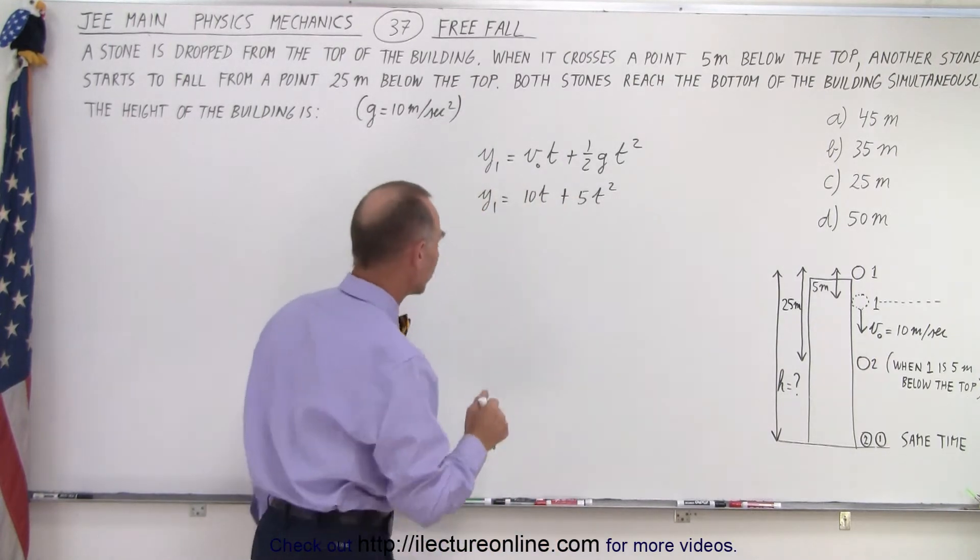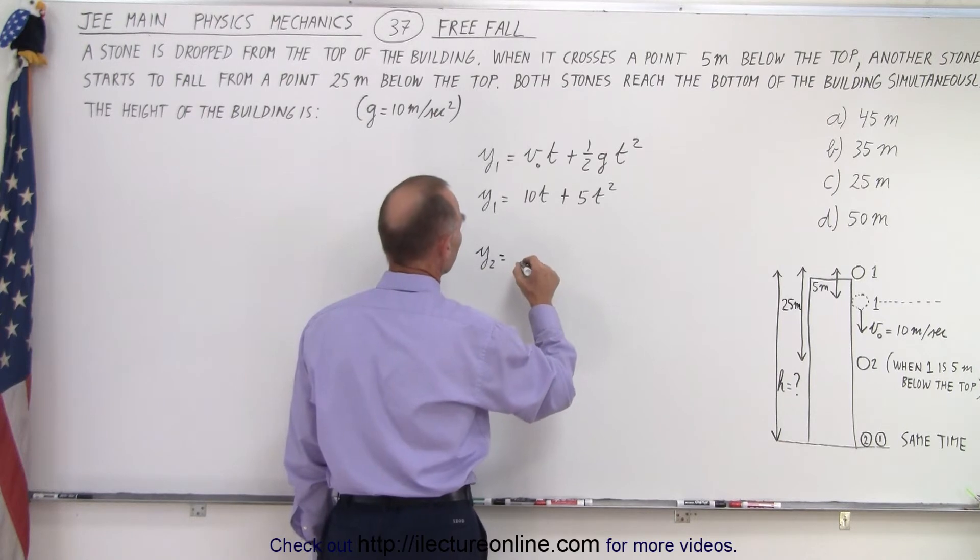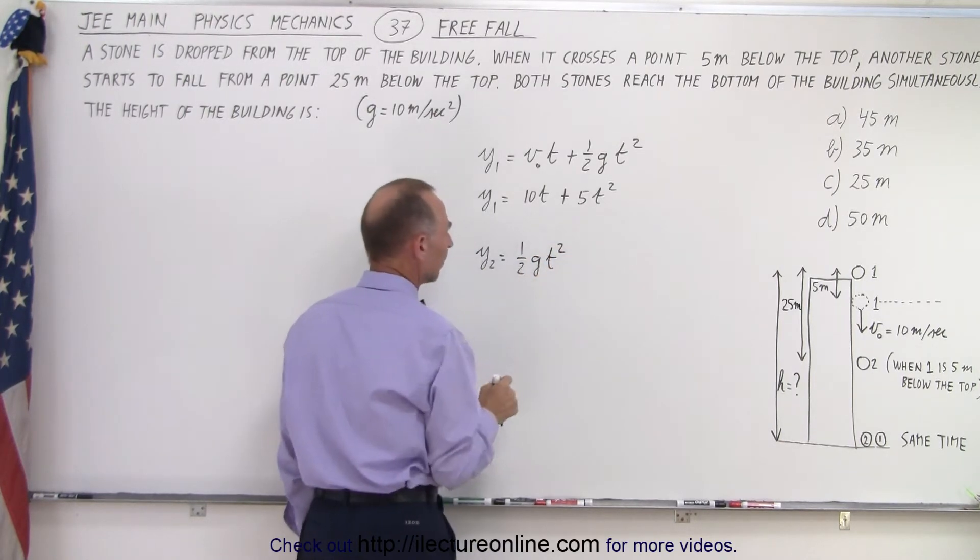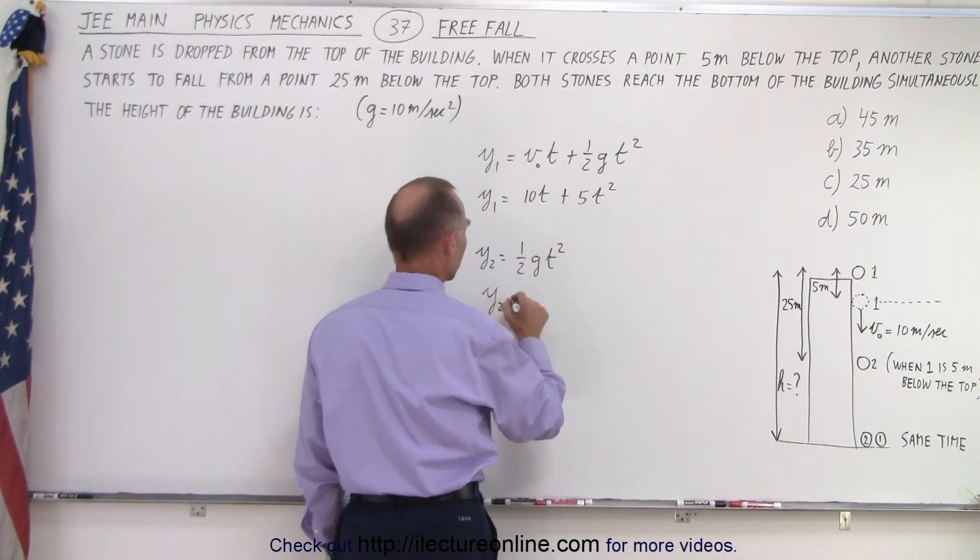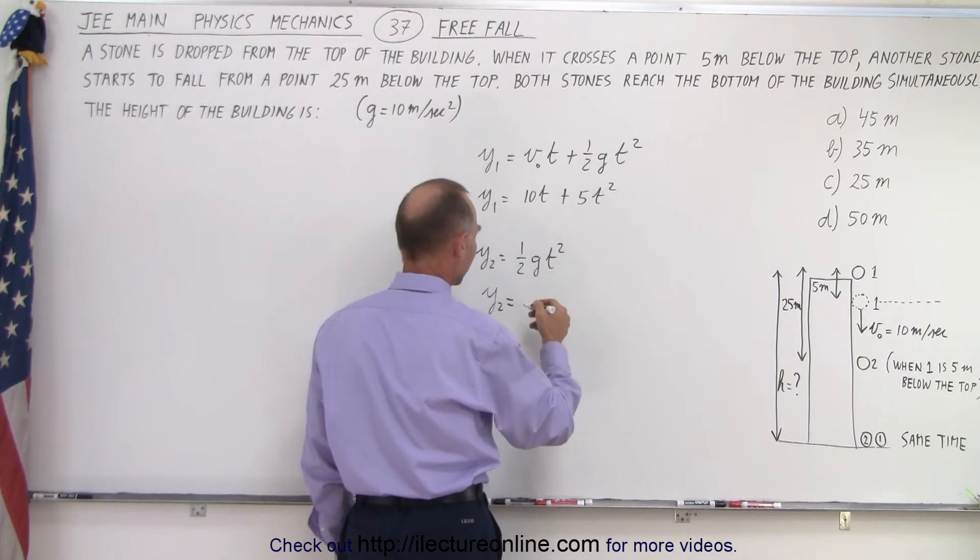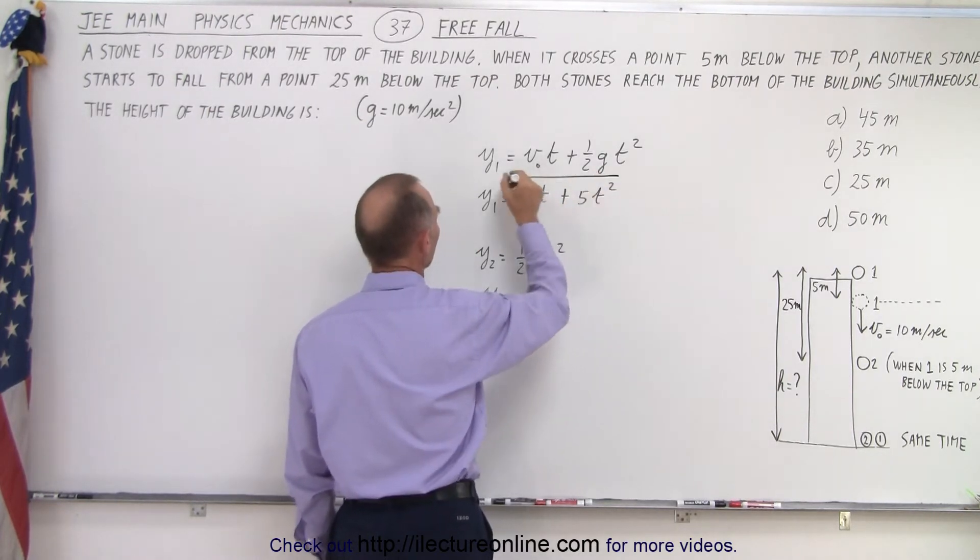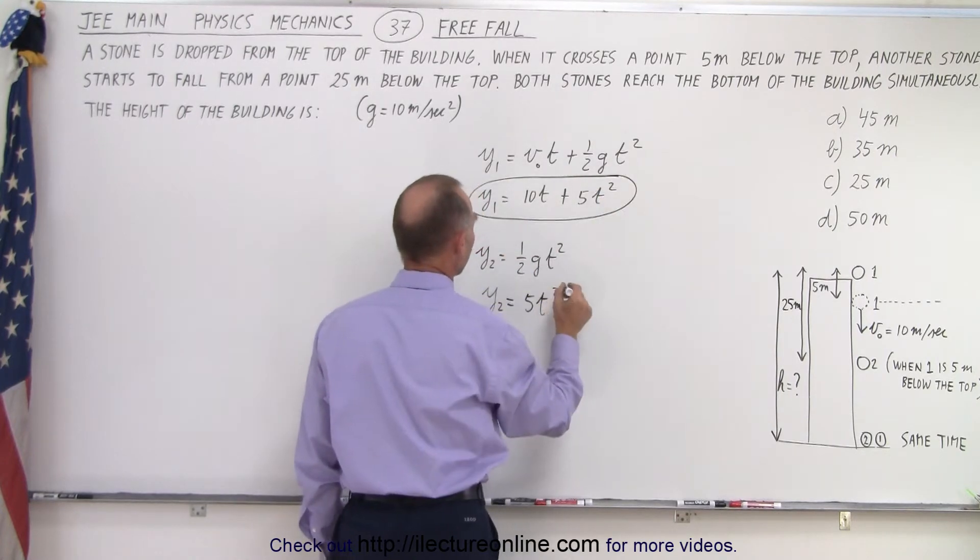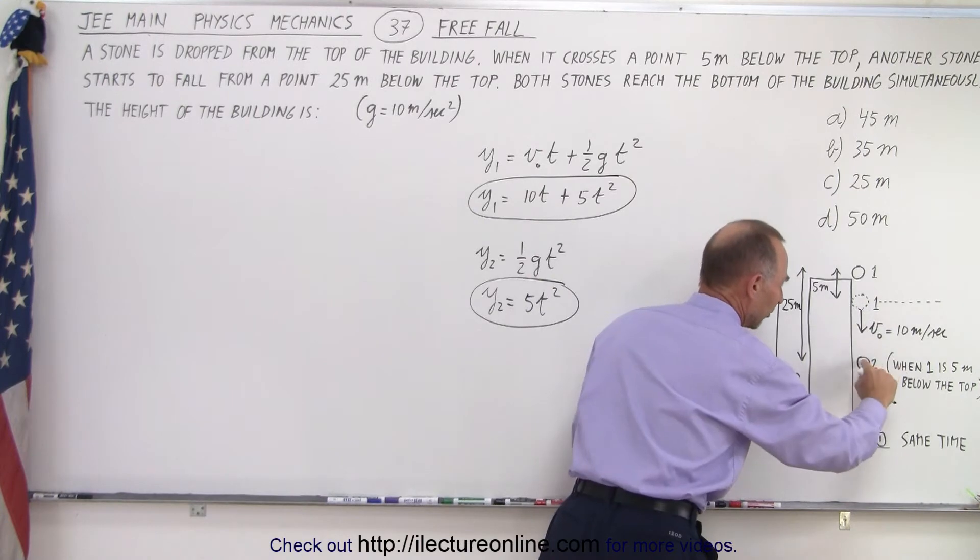Now, we can do the same thing for rock 2. We can say that y2 is equal to 1 half g t squared, because there's no initial velocity at this point, and since g is 10, 1 half times 10 would be 5t squared. So, this is the height fallen by rock 1, and this is the height fallen from rock 2 from this point onward.